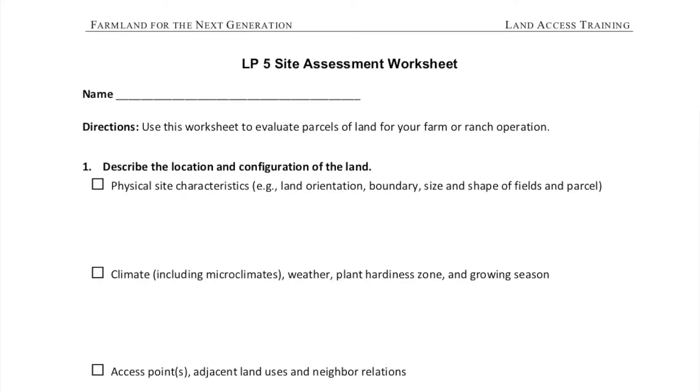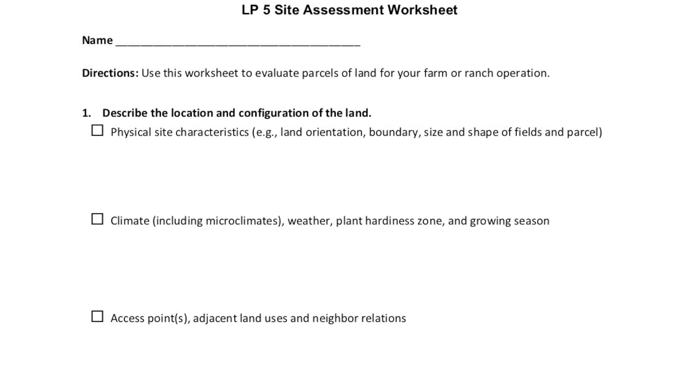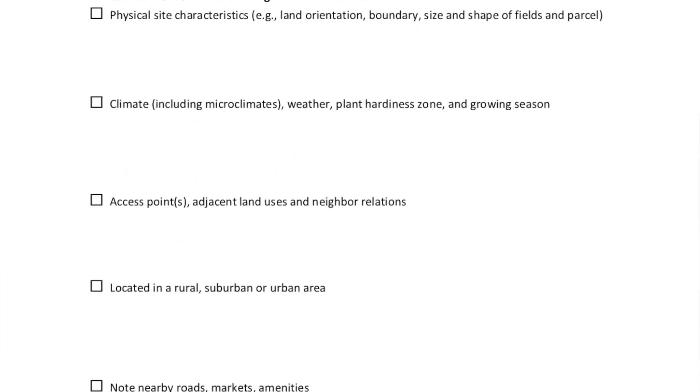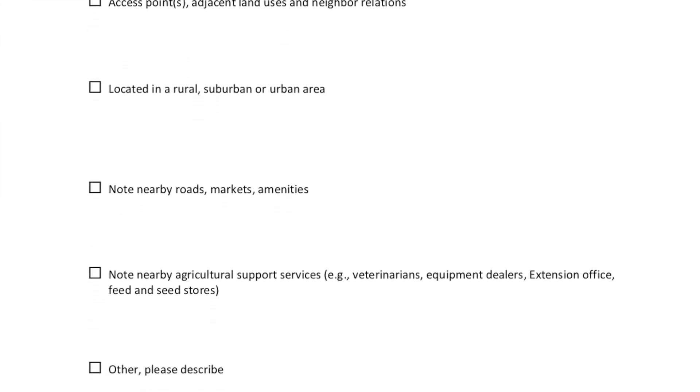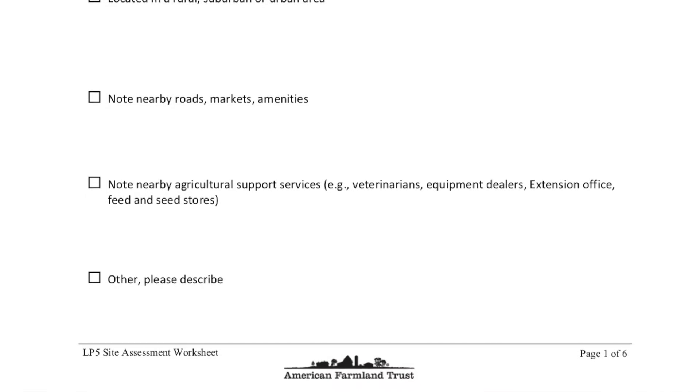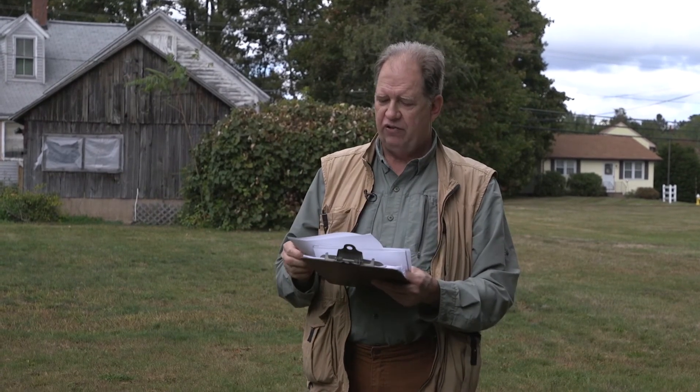Under the site assessment worksheet, physical characteristics include land orientation, boundary size, and shape of fields and parcels. This particular parcel is oriented kind of northwest to southeast. If you're thinking about sun exposure — particularly if you're a vegetable or fruit producer — you really need to have full sun. So you need to know where the sun is at different times of day, where you might be able to site structures like greenhouses and high tunnels, and consider field orientation and the boundary size and shape of fields and parcels.